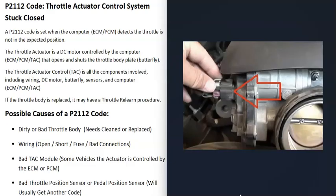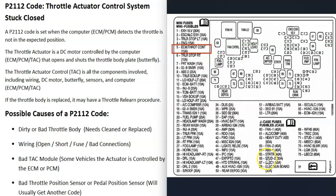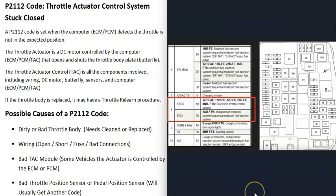The next thing that could cause this code is some kind of wiring issue — an open, a short, a blown fuse, or a bad connection. Go through and be sure all those connections look good and all the pins on those wires are pushed in all the way. It's also a good idea to check any related fuses. How fuses are labeled is different for every vehicle — for example, on a 2007 Chevy Silverado it's labeled ECM Throttle Control, fuse number five, and on a 2015 Toyota Corolla the fuse is labeled ETCS, fuse number eight.